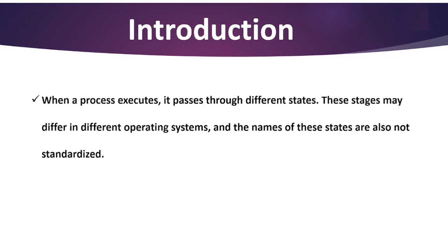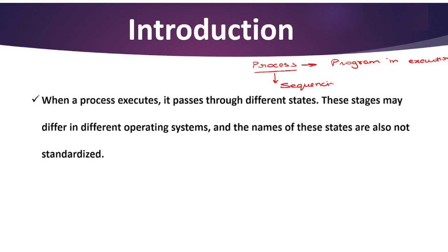This is the introduction of process life cycle, and before moving to its introduction, I would like to tell you the meaning of process. The basic definition of process says it is a program in execution. The execution of a process must progress in a sequential fashion, so we can also say process is a sequential task given to an operating system. As computer science students, you must have written many computer programs in a text file — whenever we execute that program, it becomes a process.